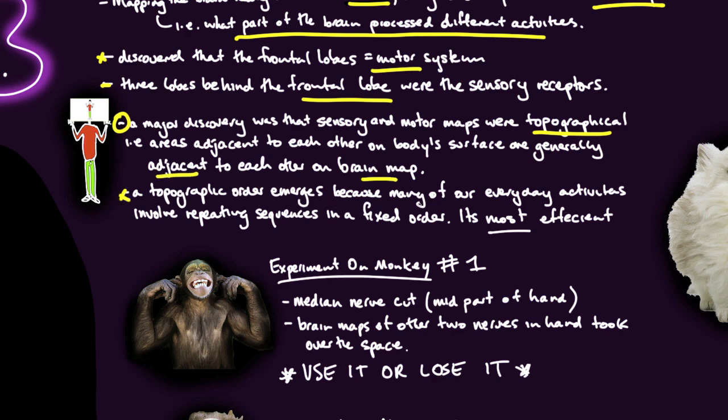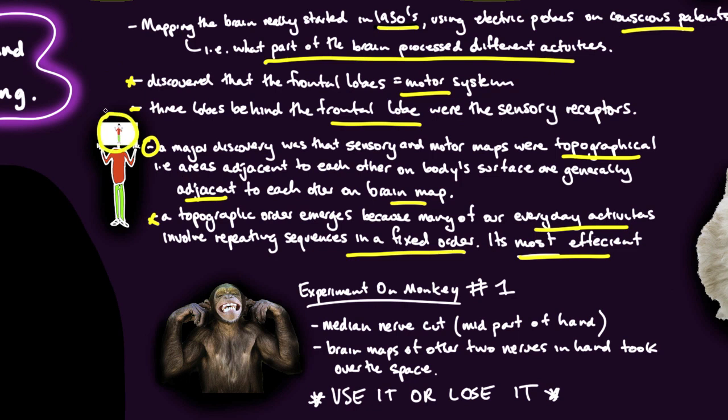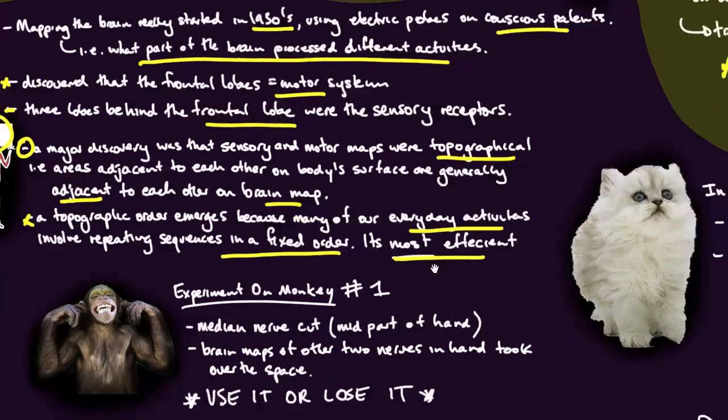A topographic order emerges because many of our everyday activities involve repeating sequences in a fixed order. It's most efficient. To bring that to life, if you were to bend over and pick up a ball as a child, your shoulder fires and your elbow and your wrist and your hands and your muscles all work in a sequence. It was found that that sequence was very similarly mapped in the brain, so it's most efficient that they're close together.